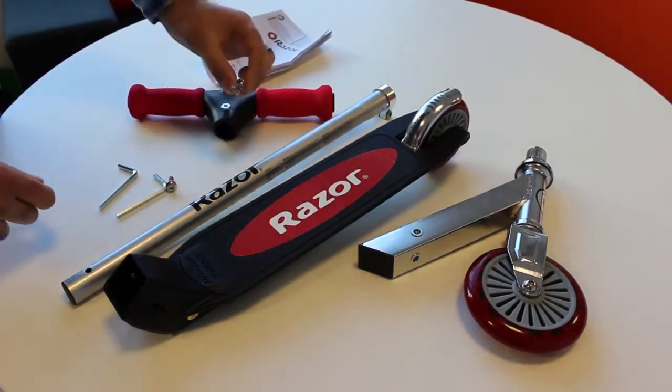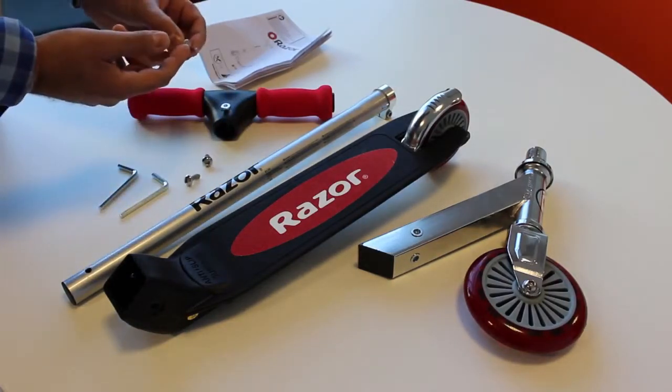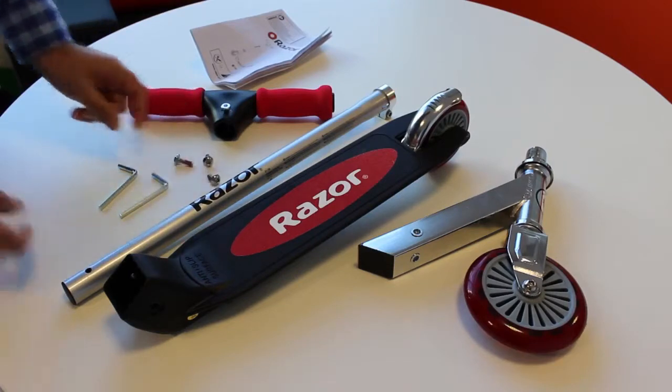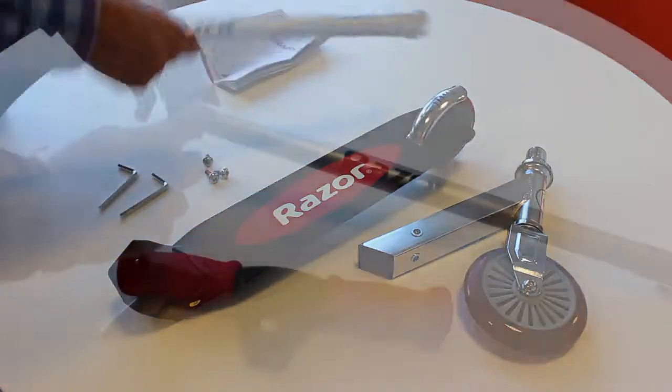the allen keys, the three bolts, one is slightly longer and has a pink color tie on it, your deck, the actual handlebar and the hand grips themselves.